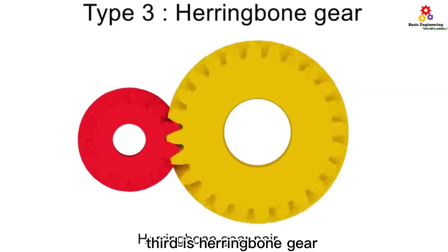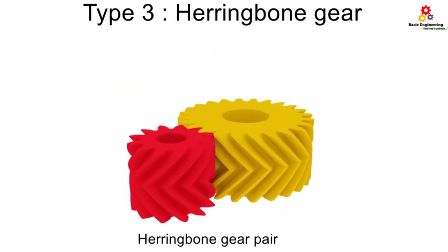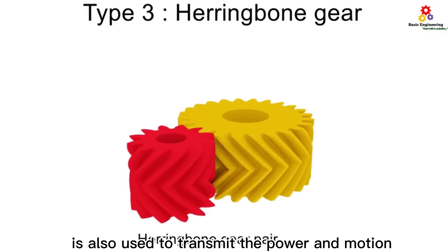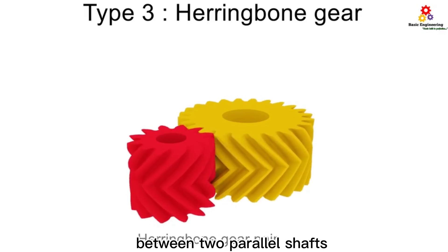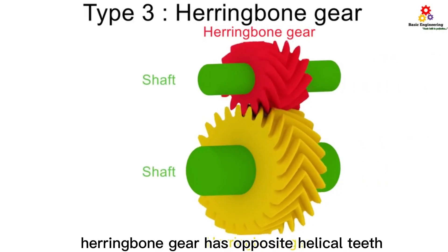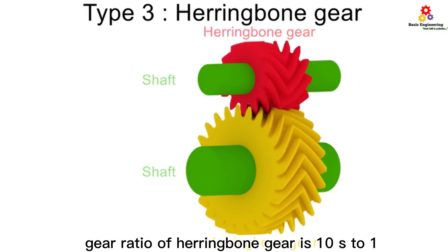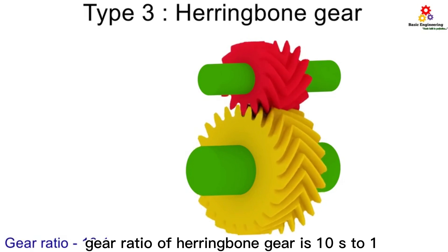Third is herringbone gear. Herringbone gear is nothing but a double helical gear. This gear pair is also used to transmit power and motion between two parallel shafts. Herringbone gear has opposite helical teeth. The gear ratio of herringbone gear is 10:1.